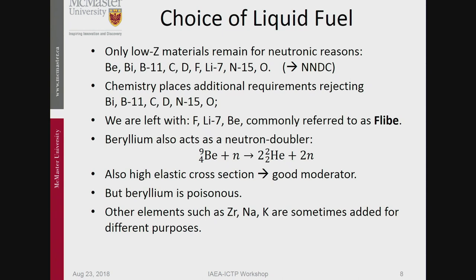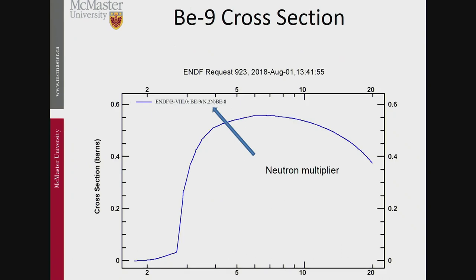Beryllium is interesting because it acts as a neutron doubler — you shoot a neutron on beryllium-9 and you get two helium-4 plus two neutrons out. So you shoot with one neutron and get two neutrons out, which is nice. It's actually very nice to have a beryllium neutron multiplier. But the problem is that this N-2N reaction starts only at basically 2 MeV. Do we have 2 MeV neutrons in a nuclear reactor? Yes — from fission. The average energy of a fission neutron is around 1 MeV, but the distribution covers 2 MeV.